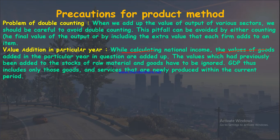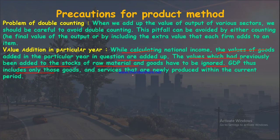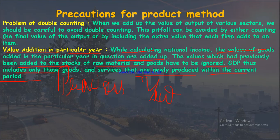The second precaution is value addition in a particular year. When calculating national income, we add only the value of goods added in the current year. Values previously added to stocks of raw material goods must be ignored. GDP thus includes only those goods and services newly produced within the current period.